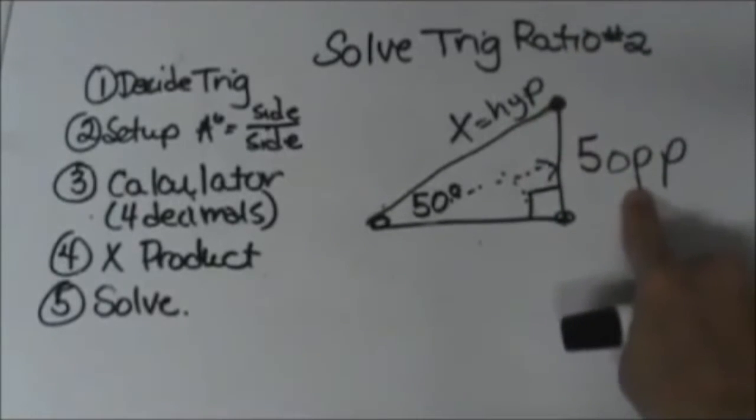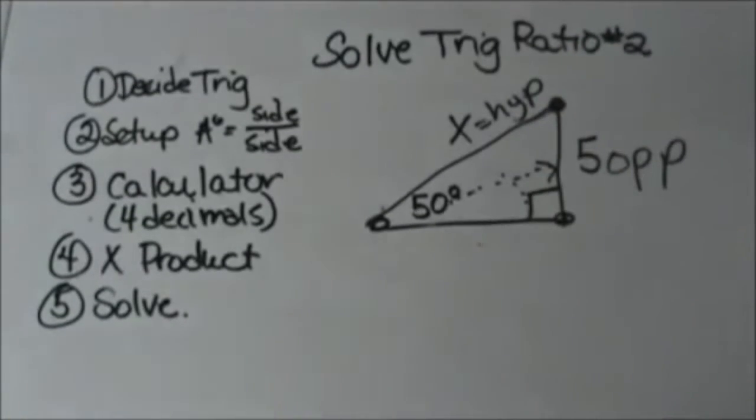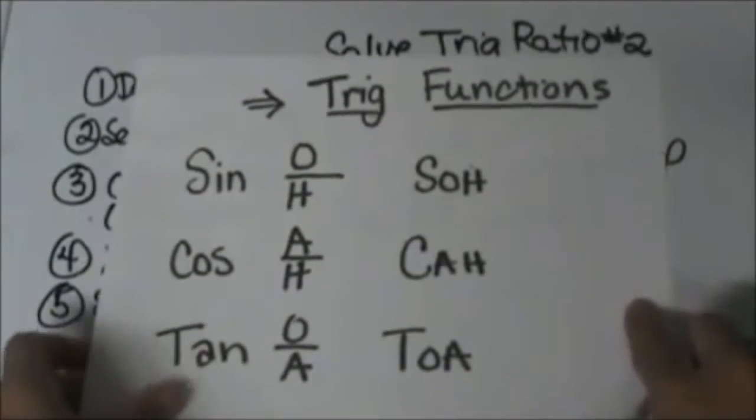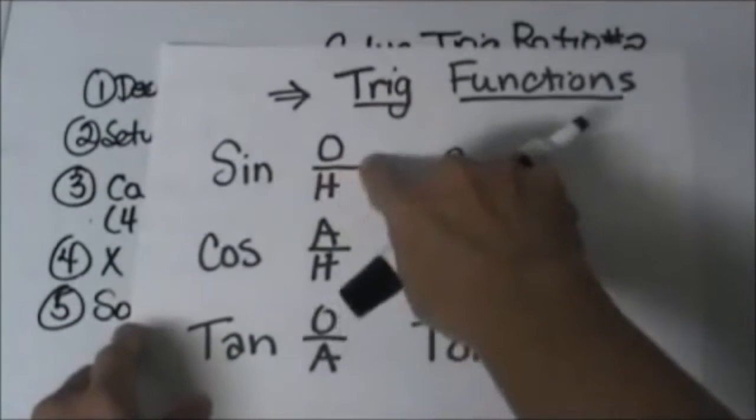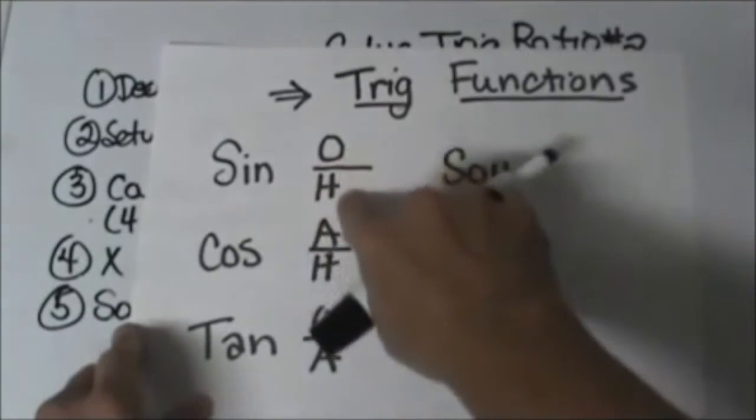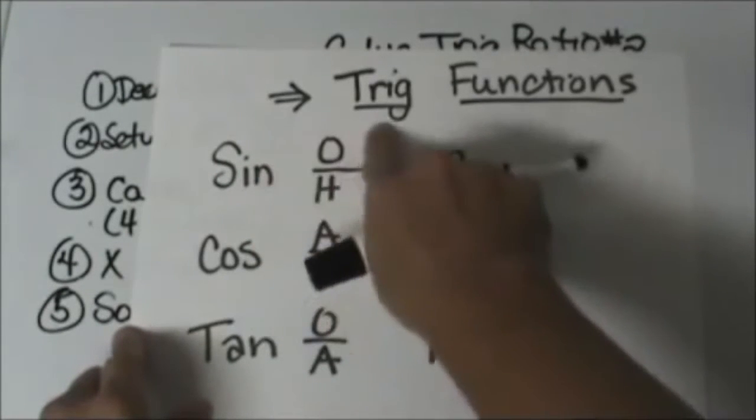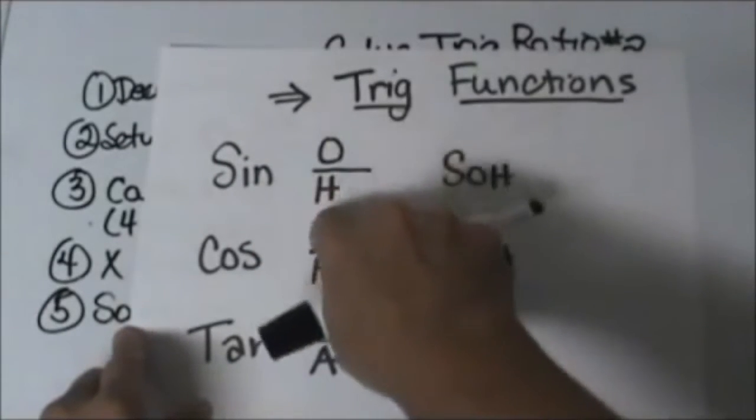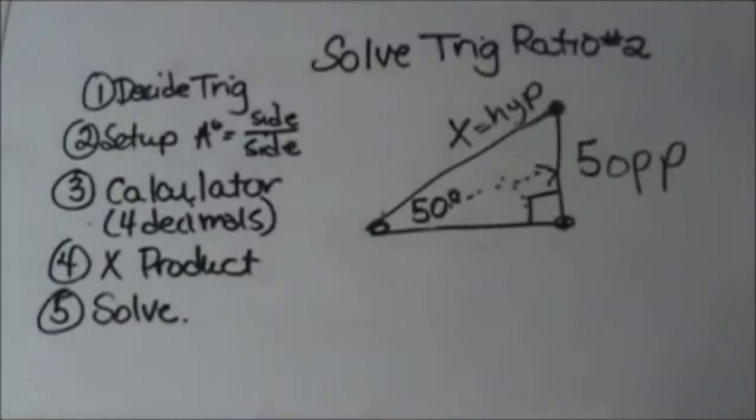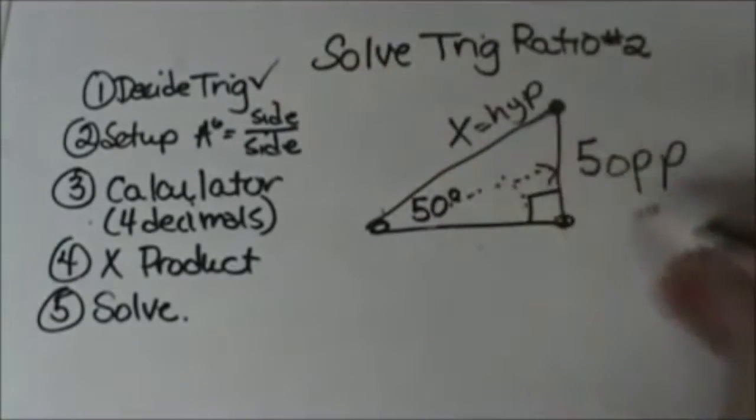So which trig ratio uses opposite and hypotenuse? Bring over your little cheat sheet and say which one is opposite and hypotenuse? That's my sine function. So I'm going to take the sine of the angle and that's going to equal the ratio of opposite over hypotenuse. So we have already decided our first step, which trig function.